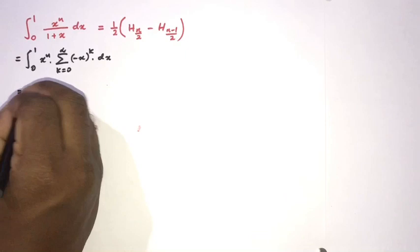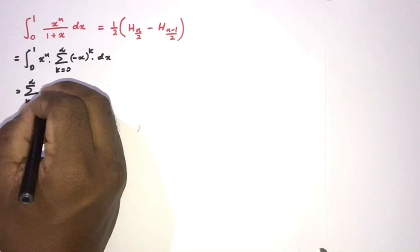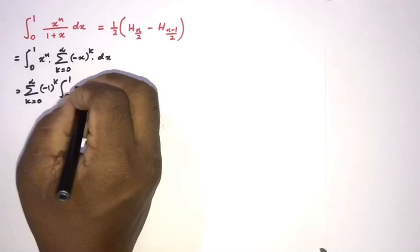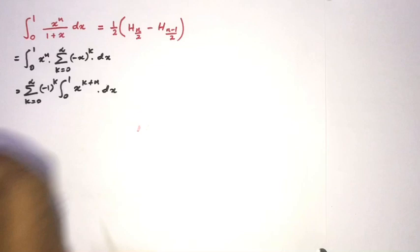We can switch the integral sign and the sigma notation, writing the sum from k equals 0 to infinity of (minus 1) to the k power times the integral from 0 to 1 of x to the (k plus n) dx.